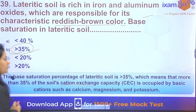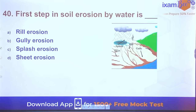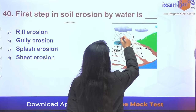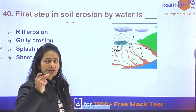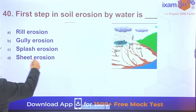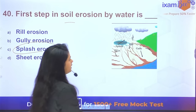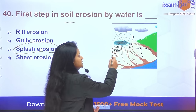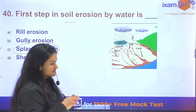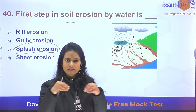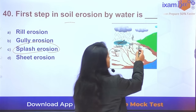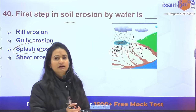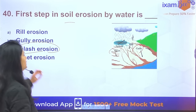Question 40: The first step in soil erosion by water — first, water droplets cause splash erosion. Then gradually the whole sheet is removed — sheet erosion. After that, rills (finger-like structures) form — rill erosion. Finally, large gullies form — gully erosion. Beyond gullies, ravines form as the final stage.